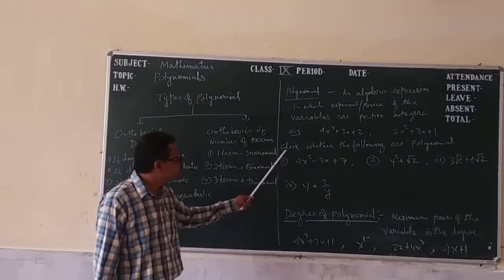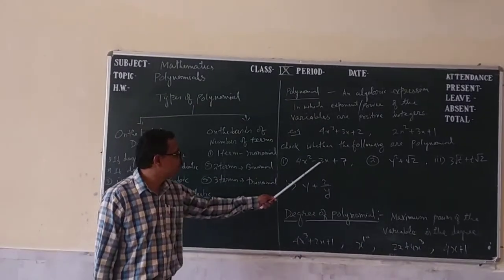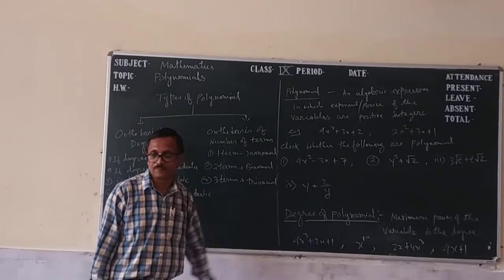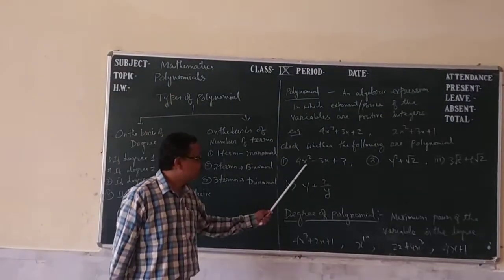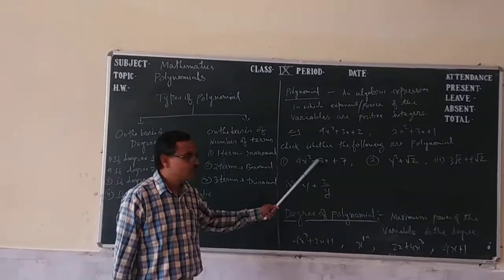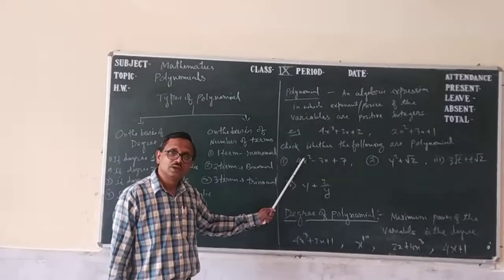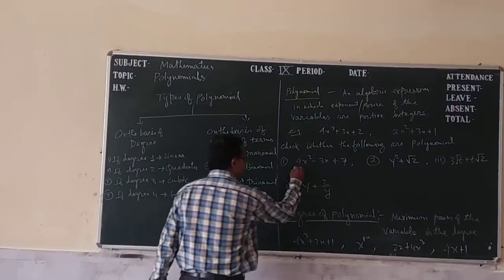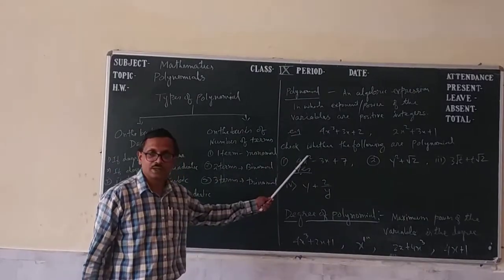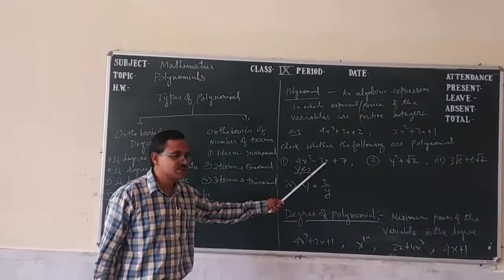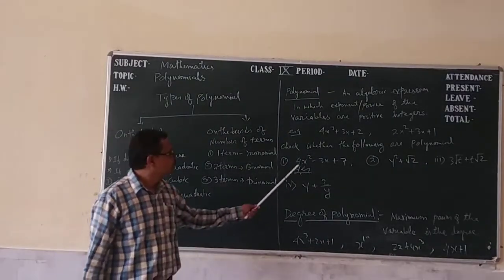Now the question is: check whether the following are polynomials or not. First question: 4x square minus 3x plus 7. Look here — this is 4x square, meaning the power of the variable is plus 2. Here power of the variable is 1. So this is a polynomial, because the power of x square is a positive integer.